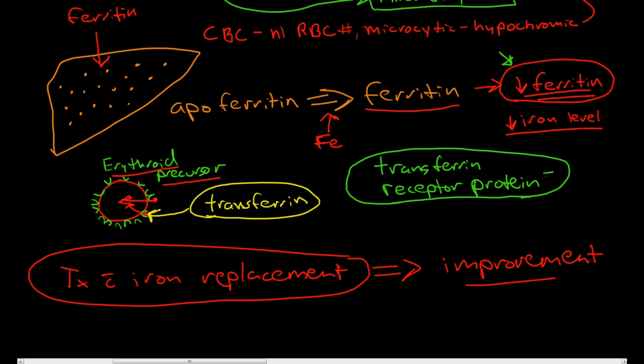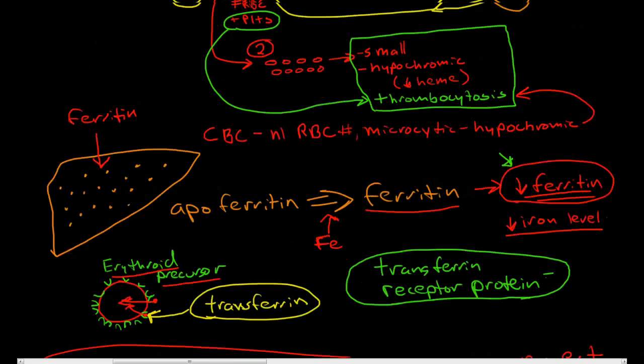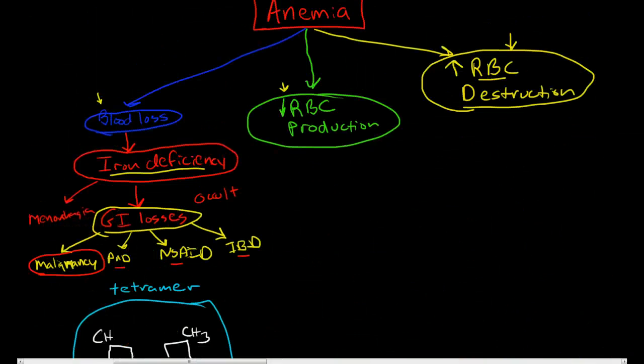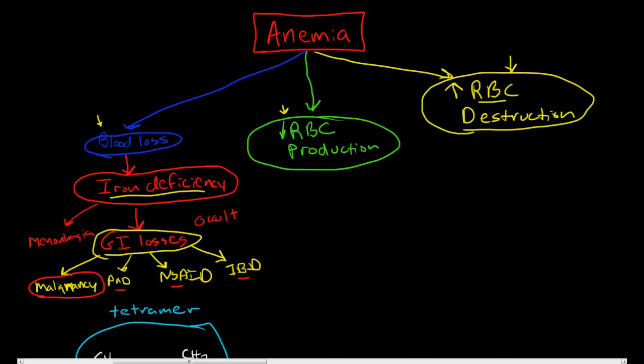Those are the ways to diagnose iron deficiency anemia and the physiology behind it. I'm going to break this video up here, and in my next video I will talk about the other major classes of anemia: anemia due to decreased red blood cell production, and anemia due to increased red blood cell destruction. Please click on the link here to connect to the hemoglobin pathophysiology channel, and I'll see you in the next video.